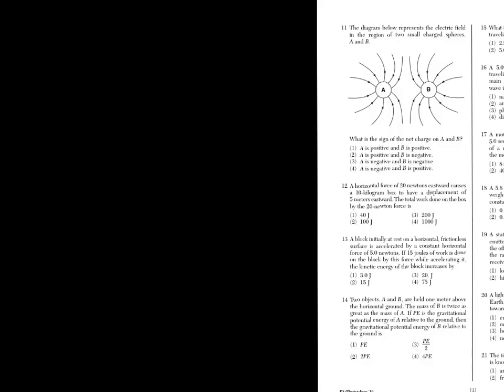Number eleven: the diagram below represents the electric field between two spheres, A and B. So if we notice, they're pointing inward, and they're not touching, they're repelling each other. If they're both pointing in the same direction, that means they're the same charge. Now, if you think about what I always tell you in the class, positives radiate out, negatives suck in happiness. So positives radiate happiness, negatives suck in happiness. If the arrows are pointing inward, that means they're both negative. Choice three.